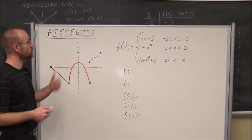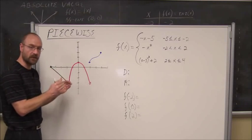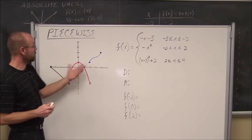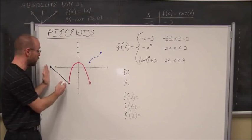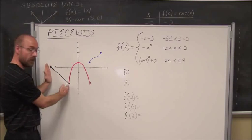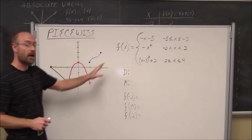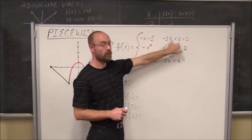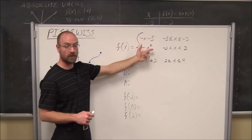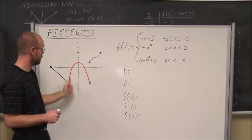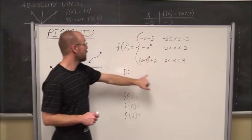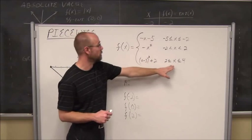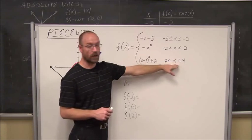Piecewise functions take pieces of our library functions, or some transformation of those functions, and combine them. We use a piece of a function over a specified interval. For example, one piece looks like a straight line over one interval; another piece is negative x squared — a downward-opening parabola — over a second interval; and the last piece is a cubed function shifted up by 2, over a third interval.